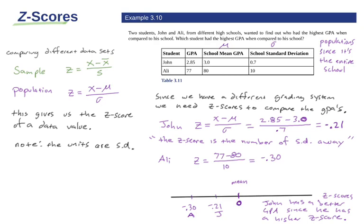We can see that Ali's score is more to the left, and John's is less negative. When comparing GPAs, we want a higher score — though this isn't always the case. If you're a runner, a lower z-score is better because less time means faster. But in this case, you want a higher score. Negative 0.21 is higher than negative 0.30, so John has a better GPA since he has the higher z-score.